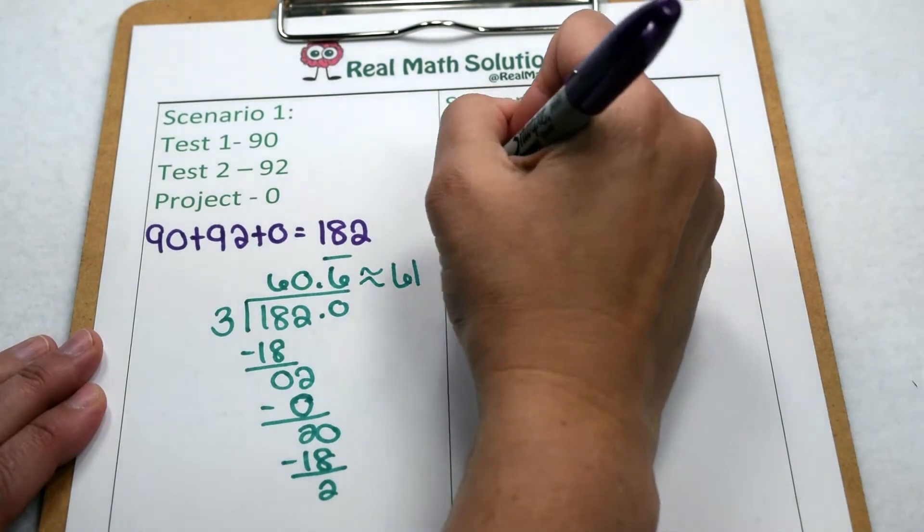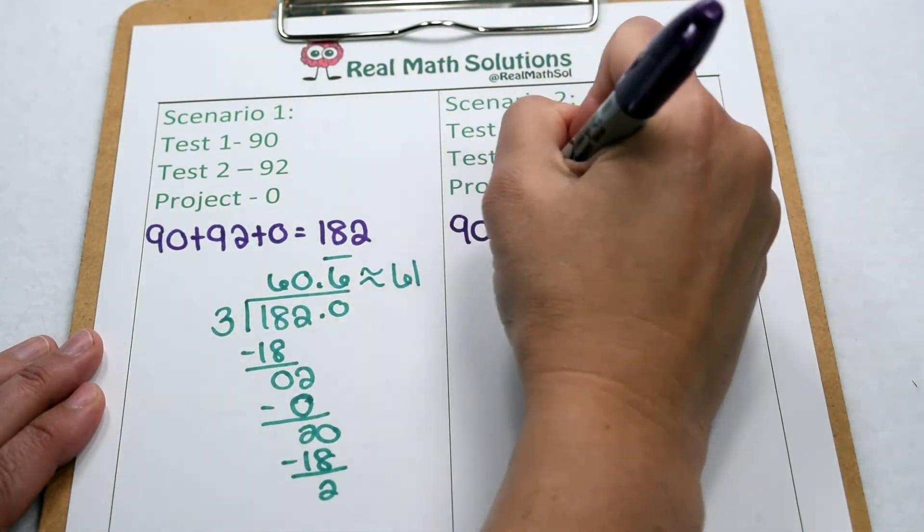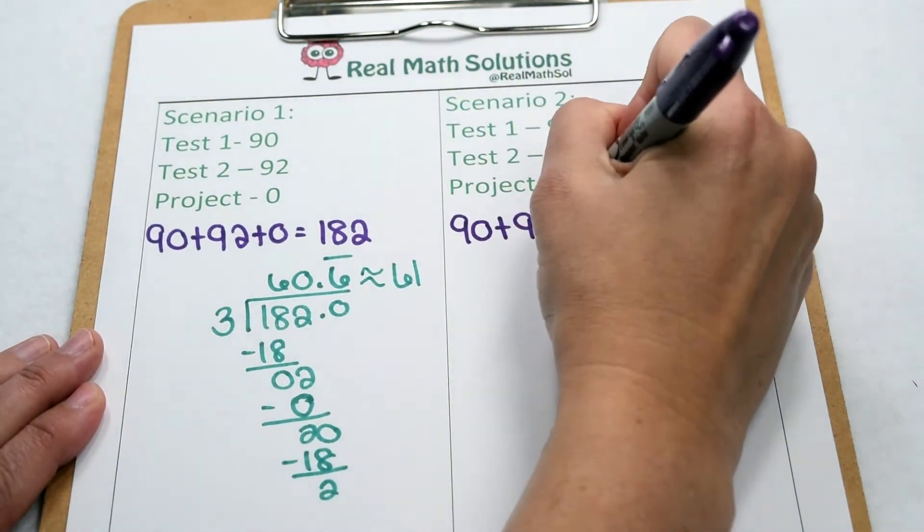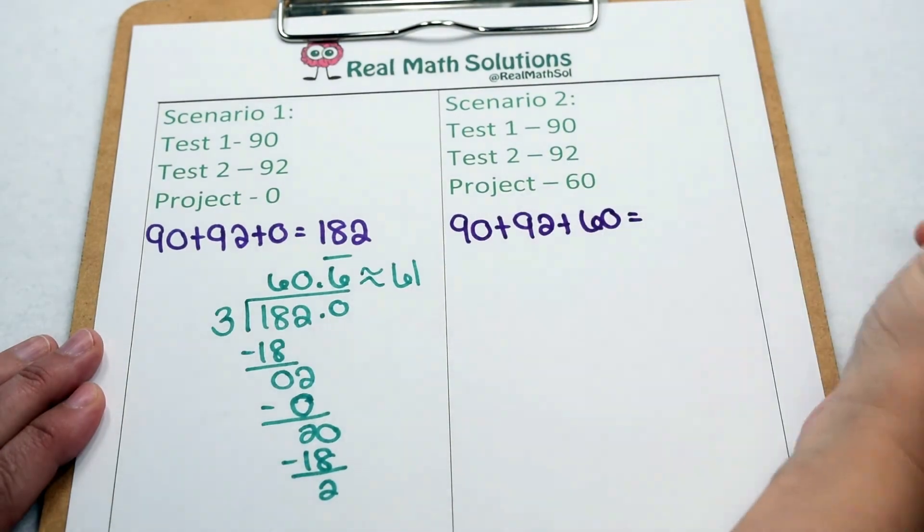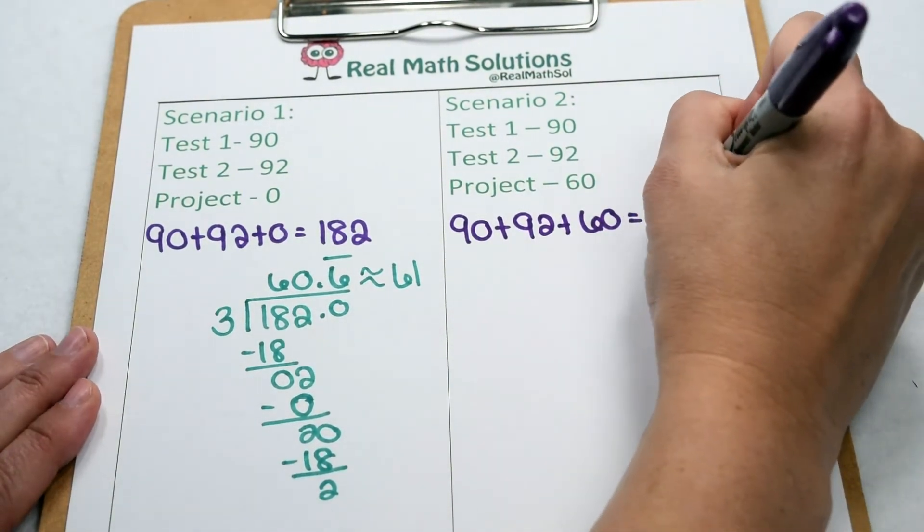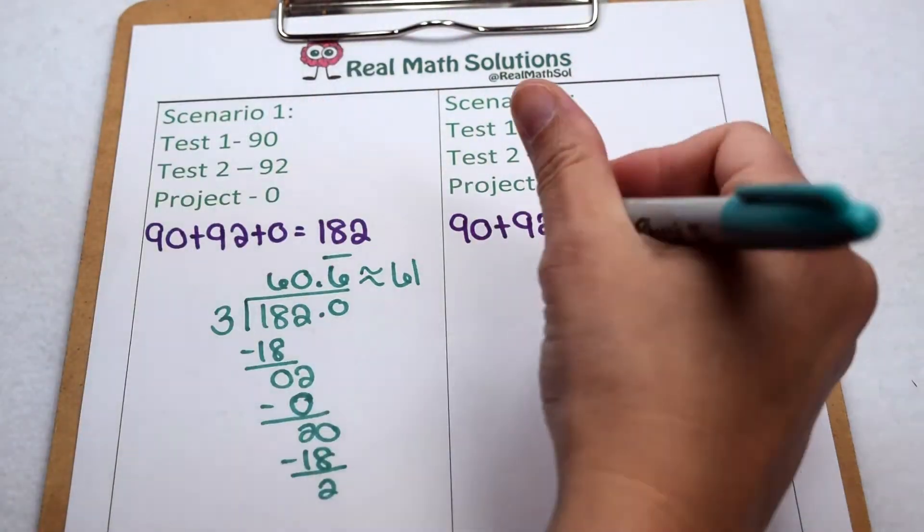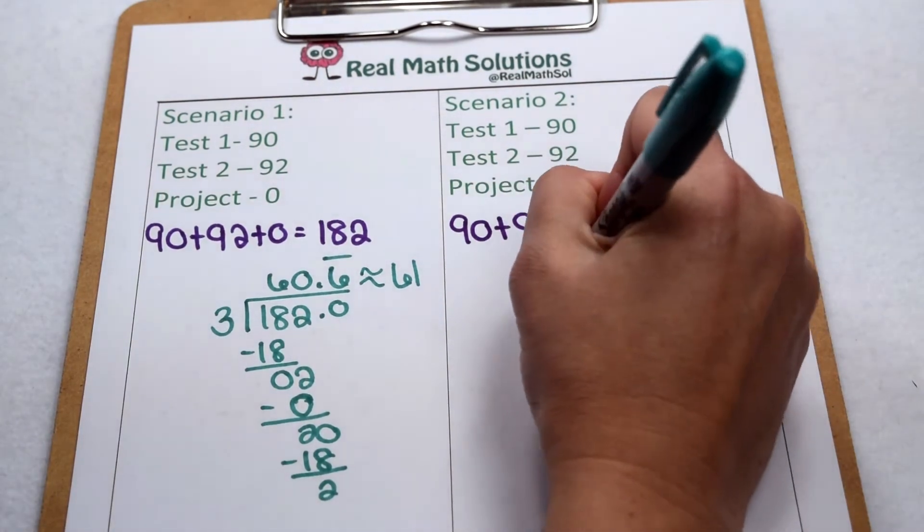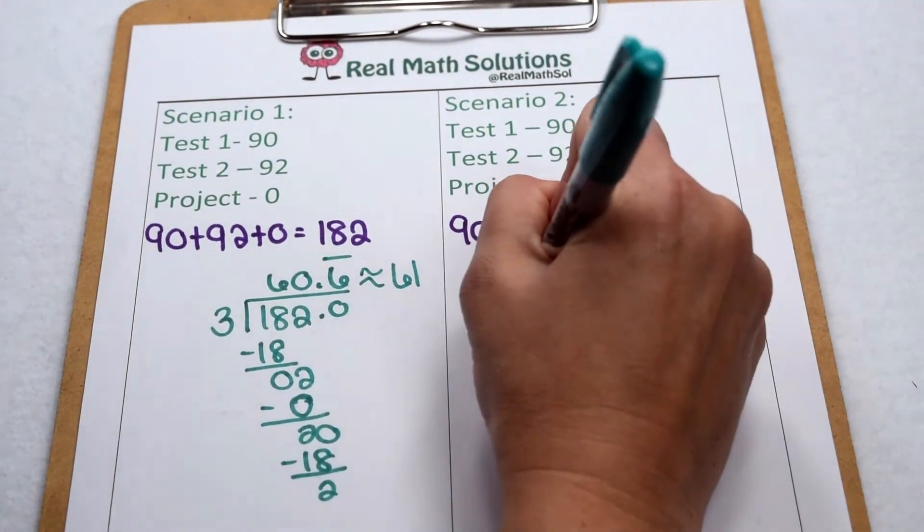Now in the second scenario, where you turned it in late to find the average, we would have 90 plus 92 plus 60. That would add up to a total of 242. So when we go to divide, we would now have 242 points divided by 3.